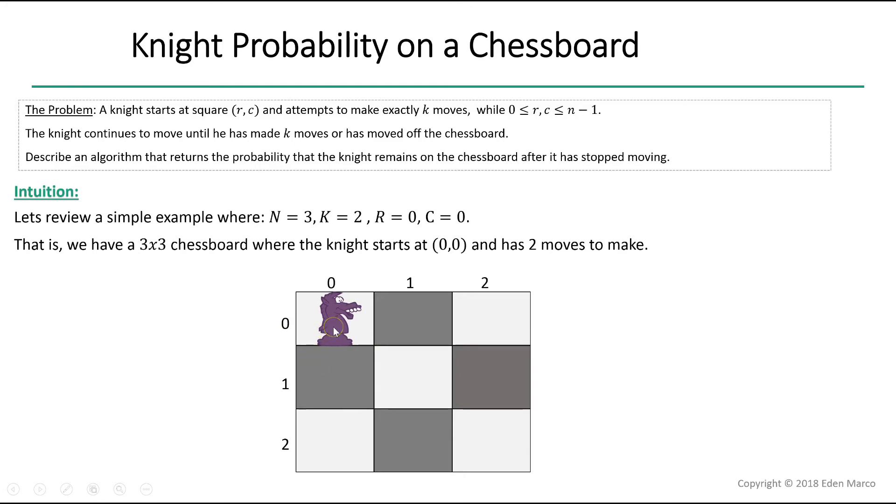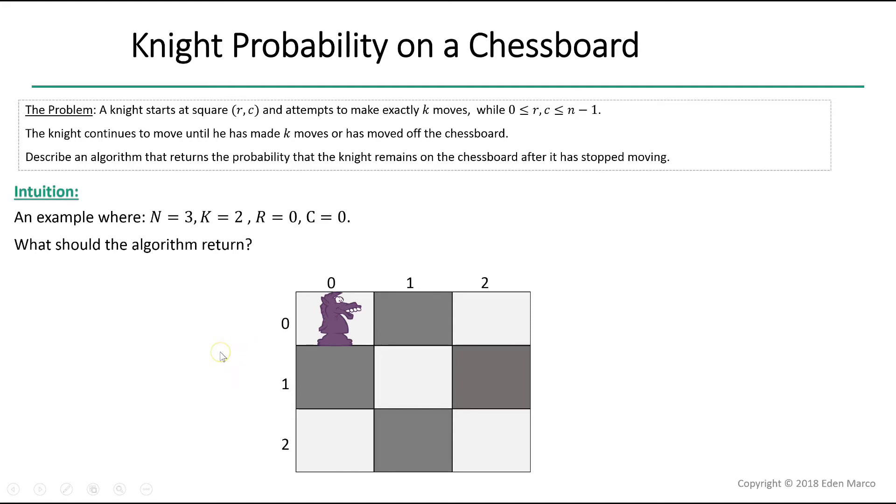In this example, what is the result our algorithm should return and how do we calculate that result? Basically, what we need to do to solve this problem is calculate all possible paths from 0, 0 that are comprised of exactly two knight's moves and end in bounds on our chessboard. Then, we need to figure out the probability of each path and summarize the probabilities.